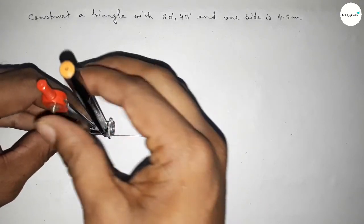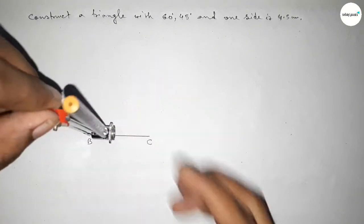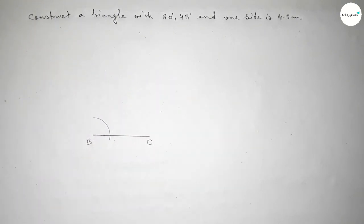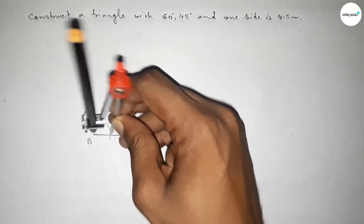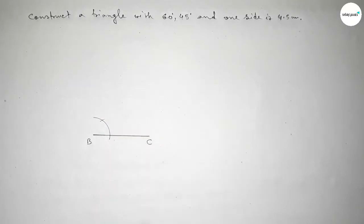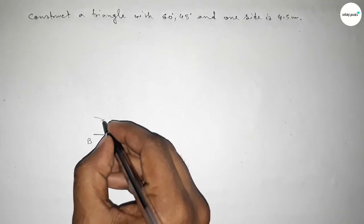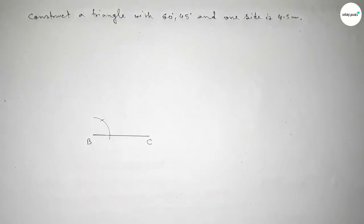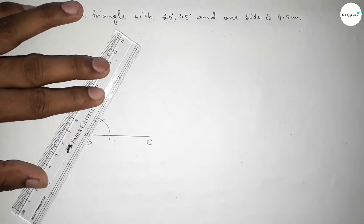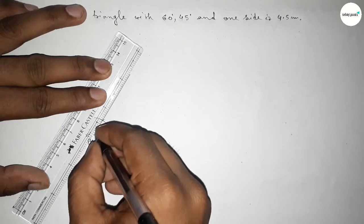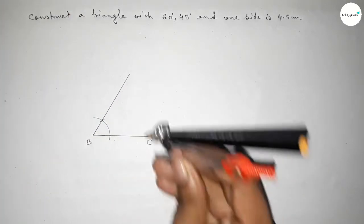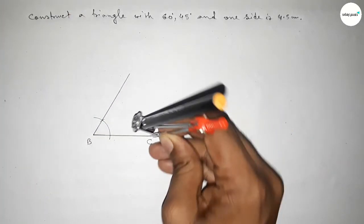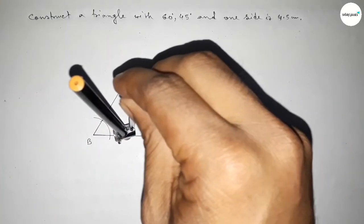Putting the compass at B and taking any length, drawing an arc, then putting the compass on the arc and taking the same length to cut another point so both curves intersect. Joining this line gives us a 60 degree angle. Next we have to draw a 45 degree angle at point C.